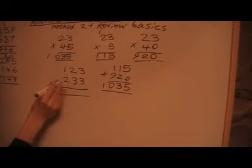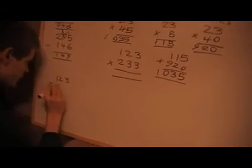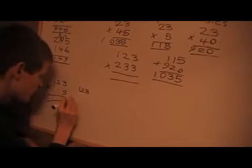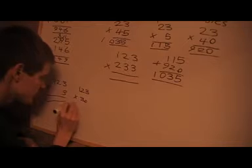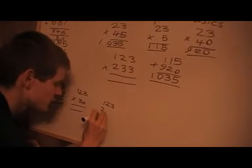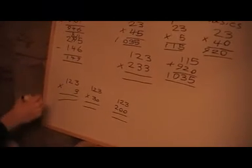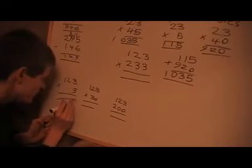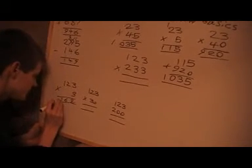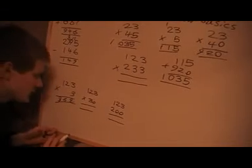Next one, we'll do this one. I'm going to do 123 times 3, plus 123 times 30, plus 123 times 200. Now this is easy, just multiply the number by 3: 3 times 3 is 9, 2 times 3 is 6, and 1 times 3 is 3, so that's 369.